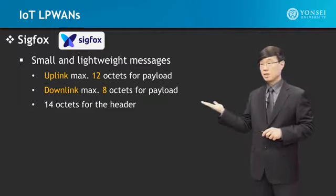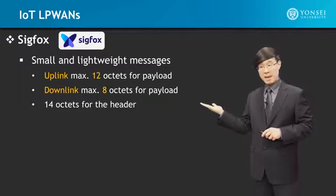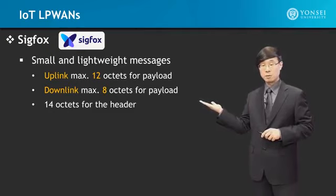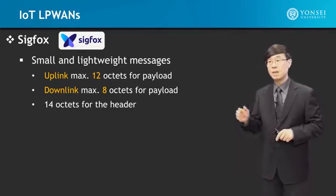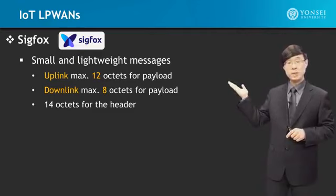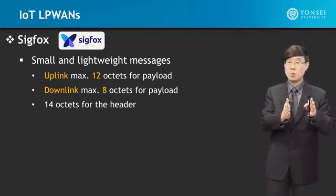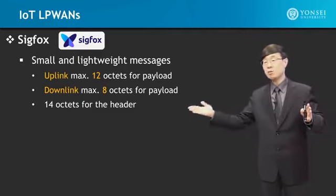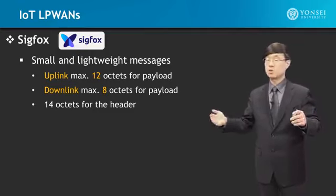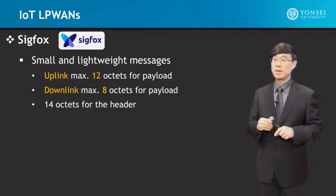In addition, the downlink maximum is 8 octets for payload. Downlink is from the LPWAN — the SIGFOX base station or access point, the master node — sending data down to the sensor devices.